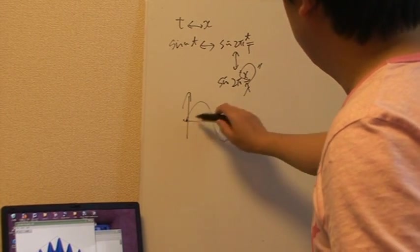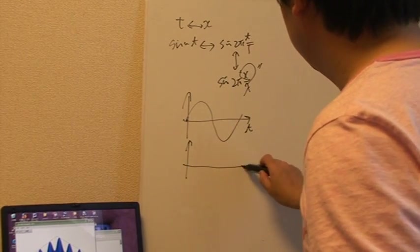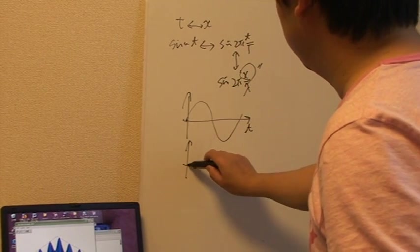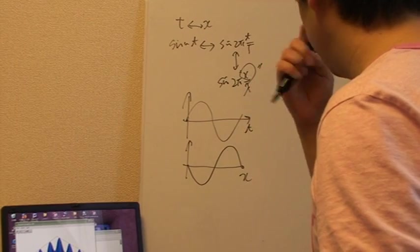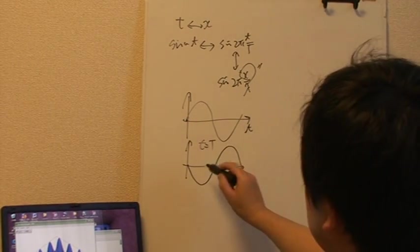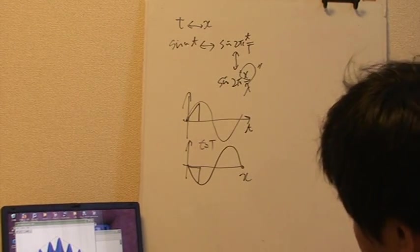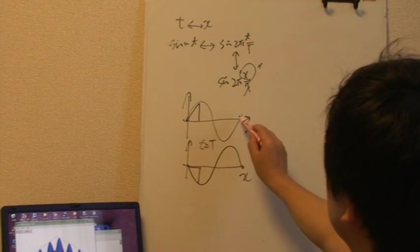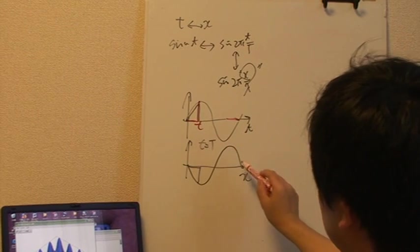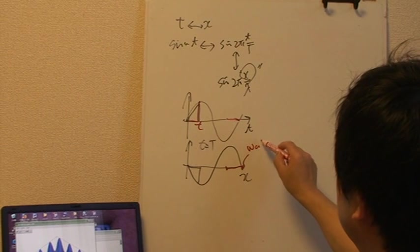The media oscillate like this in time, but the wavefront propagates in the direction x. This is when t equals T period. So this x does not correspond to this t. The x corresponds to the backward length from the wavefront. This is the wave from wavefront.